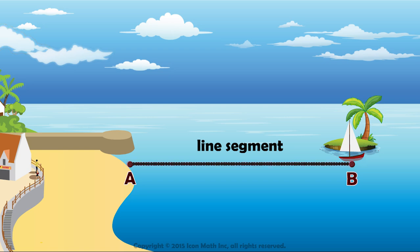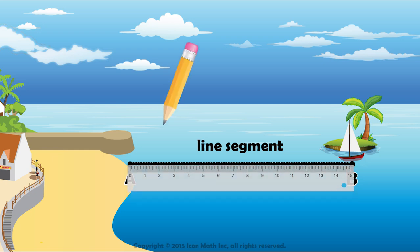It is a straight path between two points in space. Another way to draw this line segment is by using a ruler and a pencil to connect between these two points.